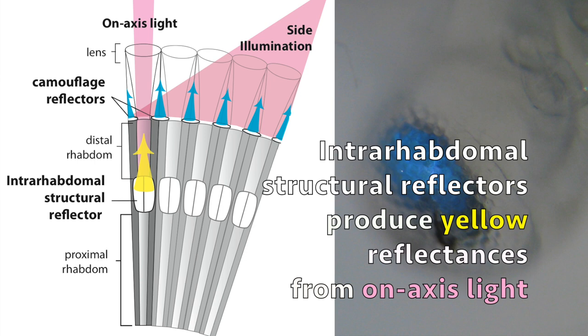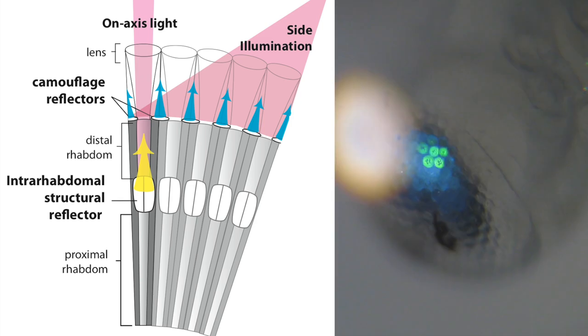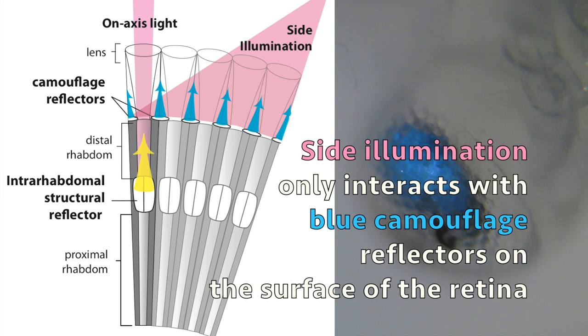Inter-rhabdomal structural reflectors produce yellow reflectances from on-axis light coming down the eye unit. Side illumination of an eye only interacts with blue camouflage reflectors on the surface of the retina, independent of the ISR.